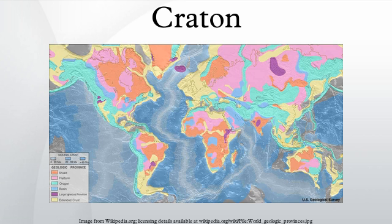The word craton was first proposed by the Austrian geologist Leopold Kobeer in 1921 as kratogen, referring to stable continental platforms, and orogen as a term for mountain orogenic belts. Later authors shortened the former term to kraton and then to craton.